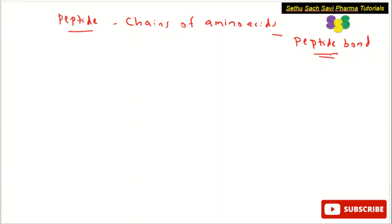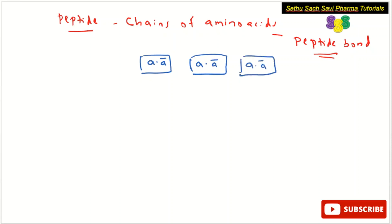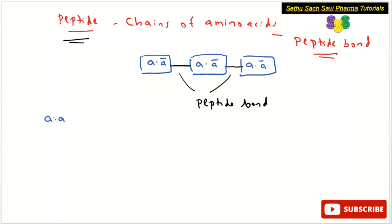For example, let us assume this is one amino acid, this is another amino acid, this is the third amino acid, and if they are linked together by a peptide bond, that is called a peptide. Now, what is the minimum number of amino acids required to form a peptide? The first and second amino acids linked by a peptide bond can be considered a peptide.